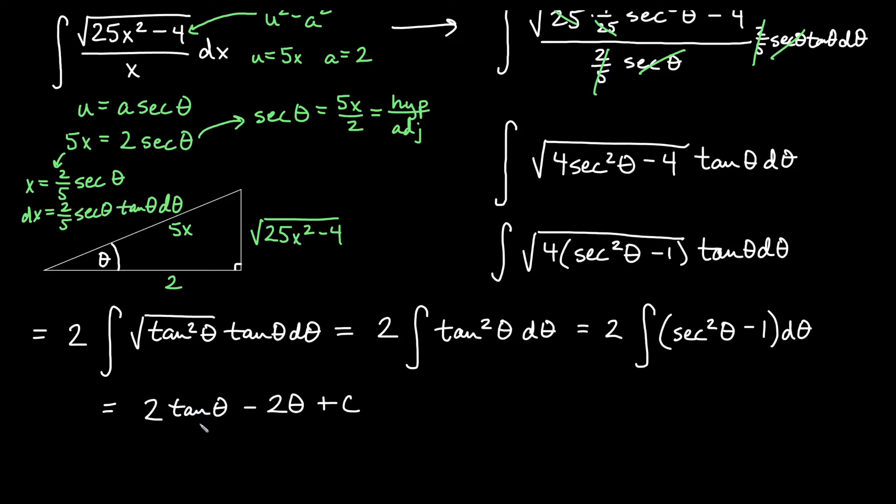And now we just have some replacing to do. So first I need to know what is my tangent of theta. Well, tan theta is going to be the opposite over the adjacent. So that is going to be the square root of 25x squared minus 4 over the adjacent 2. So that 2 will reduce this 2 as well.